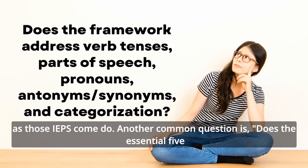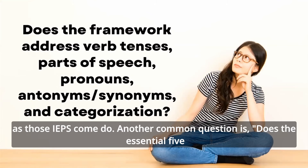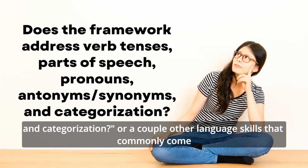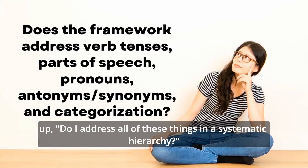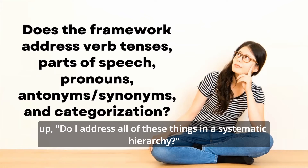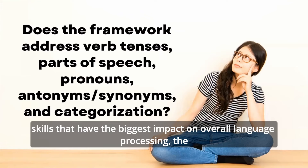Another common question is: does the Essential 5 Framework address verb tenses, parts of speech, pronouns, antonyms, synonyms, and categorization, along with a couple of other language skills that commonly come up? Do I address all of these things in a systematic hierarchy? When you use the Essential 5 Framework, you'll focus on the highest priority skills that have the biggest impact on overall language processing.